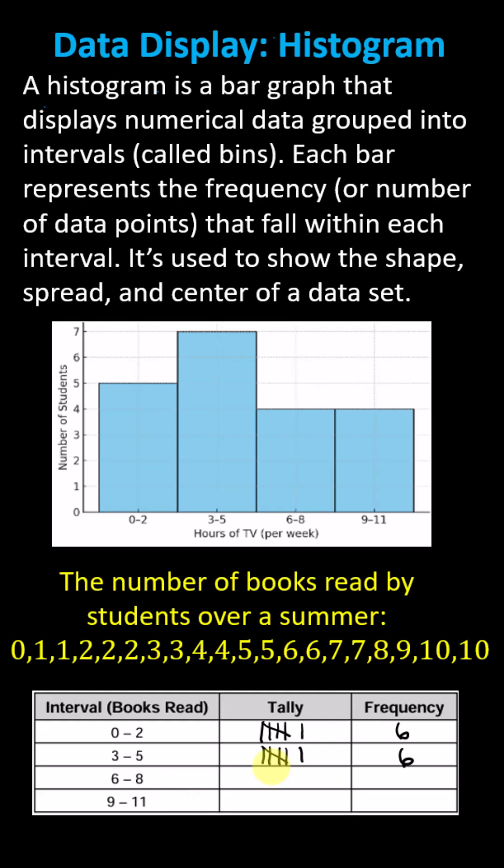For the bins 6 to 8, we have two 6s, two 7s, and one 8. The frequency is 5. For 9 to 11, we have one 9 and two 10s. The frequency is 3.